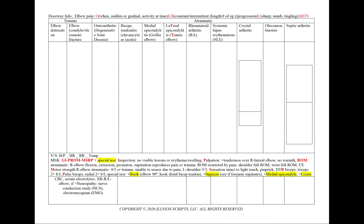For a case of elbow pain, using our mnemonic OLD CARDS, we'll note the onset — when did your pain start, did it come on suddenly or was it more gradual, and do you remember what you were doing at the time?